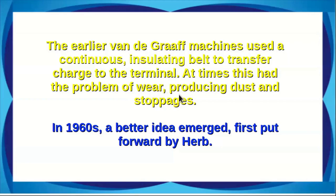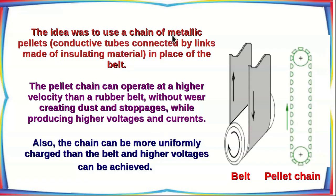The earlier Van de Graaff machines used a continuous insulating belt to transfer charge, which sometimes had problems of wear producing dust and stoppages. In the 1960s, a better idea emerged: using a chain of metallic pellets — conductive tubes connected by links made of insulating material — in place of the insulating belt. The pellet chain can operate at higher velocity than a rubber belt without wear and stoppages, while producing higher voltages and currents. Also, the chain can be more uniformly charged than the belt, allowing higher voltages to be achieved.